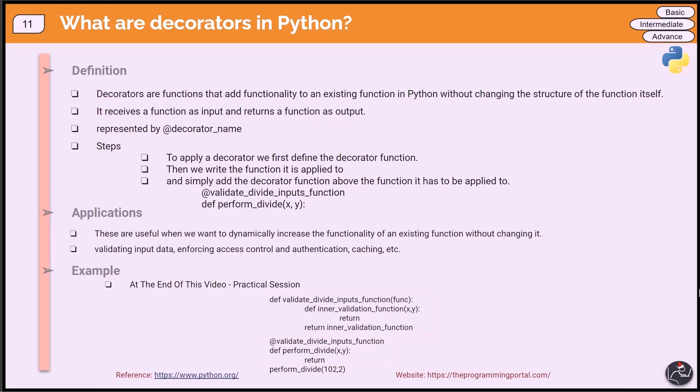Now, when we call divide function, first our decorator function will get called and based on the validation check, we can either return error if validation fails or if succeeded then we perform the divide.